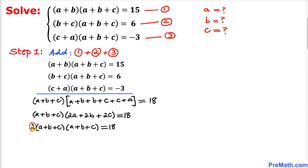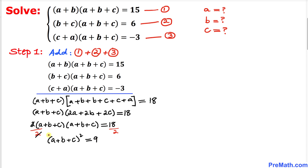After factoring out 2, we divide both sides by 2, so we get (a+b+c)(a+b+c) = 9, which can be written as (a+b+c)² = 9. Now let's take the square root on both sides to undo the square, giving us a+b+c = ±3.